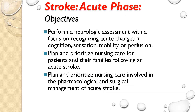So our objectives today: you need to know how to do a neuro assessment. You need to be able to recognize acute changes in the person's cognition, sensation, mobility, or perfusion. If you don't know how to perform a basic neuro assessment including cranial nerves, go back to your skills book and review. You also need to plan and prioritize nursing care for patients and families following an acute stroke, including pharmacologic and surgical management.